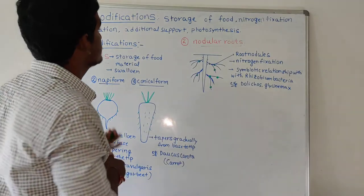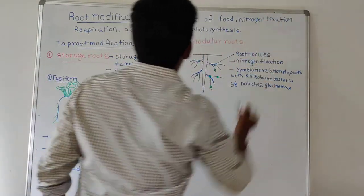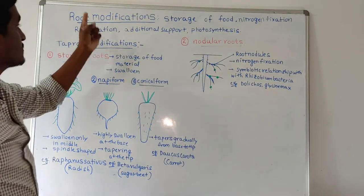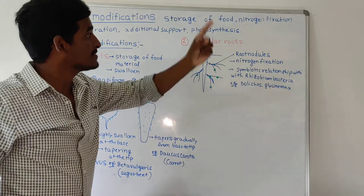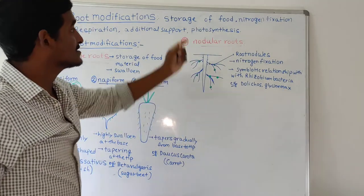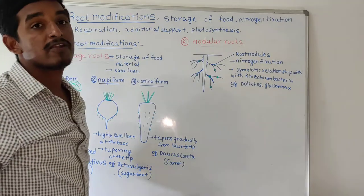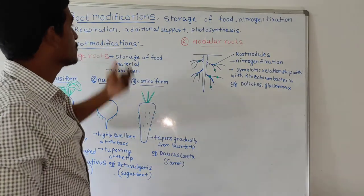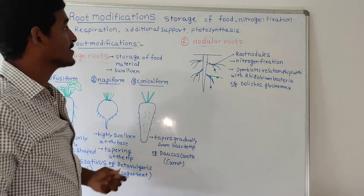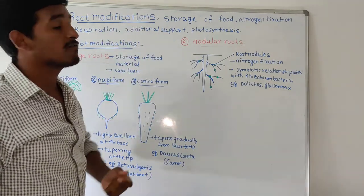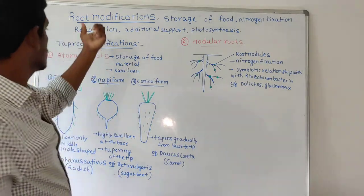The special functions performed by modified roots include storage of food material, nitrogen fixation, respiration, providing additional support, and photosynthesis. These are the special functions performed by roots when they are modified — rather than the normal functions we discussed earlier.